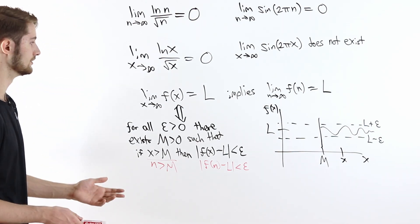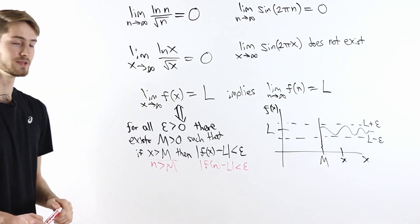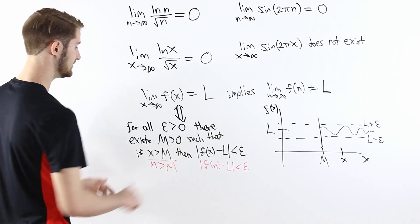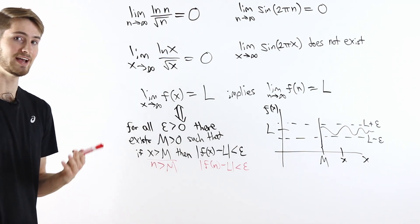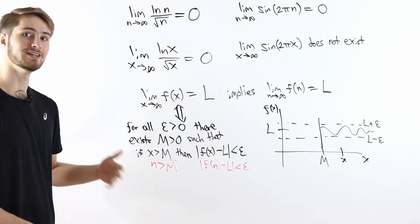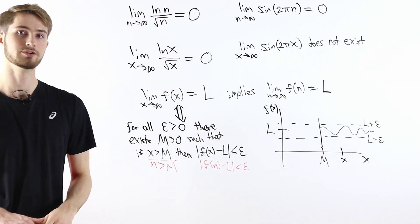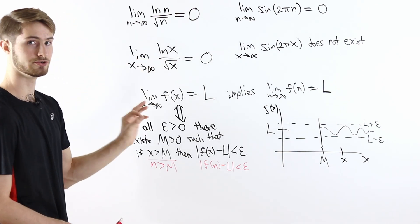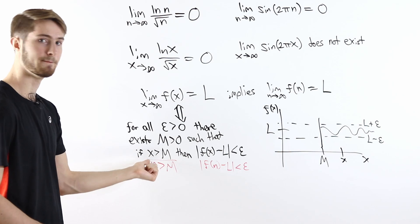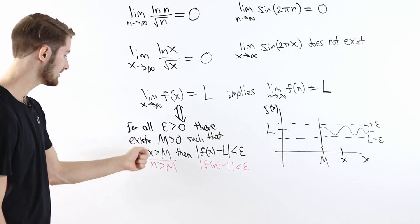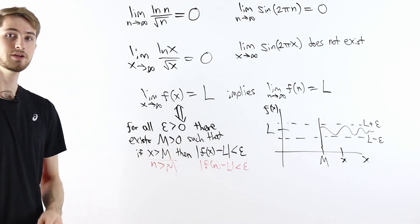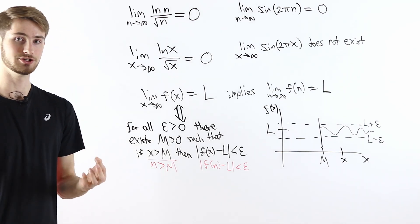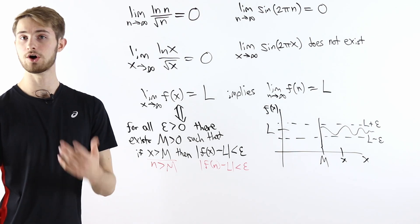Suppose we already know that the limit as x goes to infinity of f(x) equals L, and we want to prove the same holds for the limit as N goes to infinity — that is, the epsilon-delta definition holds when looking at N instead of x. We go through the definition: given any epsilon greater than 0, the definition of the limit as x goes to infinity tells us there exists some M greater than 0 such that if x is greater than M, the distance from f(x) to L is less than epsilon. Now, if N is an integer, it's also a real number.